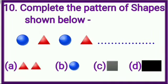Sum number 10. Complete the pattern of shapes shown below. So see students, in given pattern, we have 2 different types of shapes: circle and triangle. First, we have circle, then triangle. Again, a circle, then triangle.